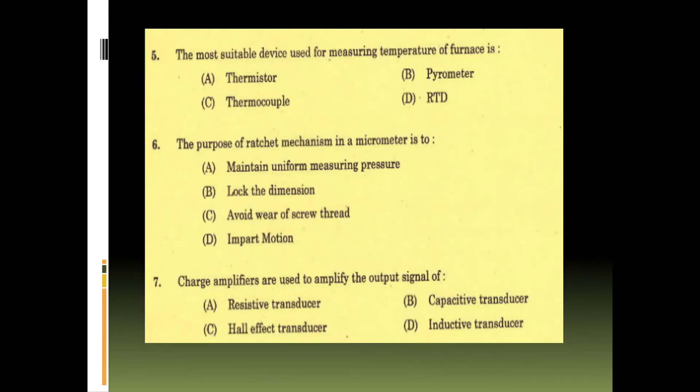Fifth question: the most suitable device used for measuring temperature of furnace. This device - thermistor, pyrometer, thermocouple, RTD. This is option B, pyrometer. Sixth question: the purpose of a ratchet mechanism in a micrometer is to - maintain uniform measuring pressure, lock dimension, avoid wear of screw thread, impart motion. It is option A - to maintain uniform measuring pressure.